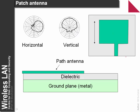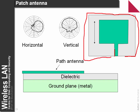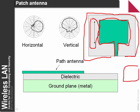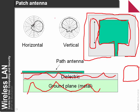A patch antenna is another useful type. We create a small patch etched on a printed circuit board, and typically this length is about half a wavelength. We see these fitted to walls and ceilings. There is a ground plane underneath, some dielectric material such as the PCB substrate, and the patch is etched on top. With this design, we get very little signal strength behind the antenna — most of it comes out the front.